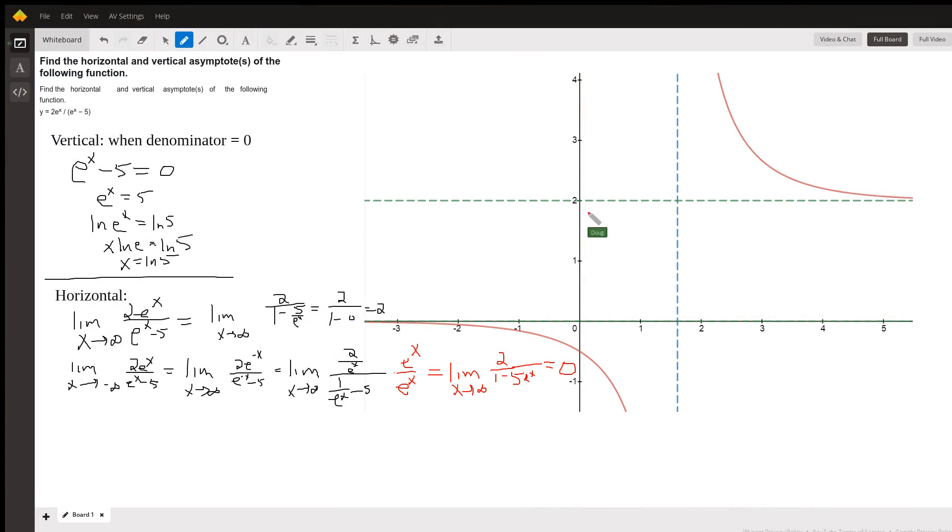Okay, over here to the right we have a graph of this function—that's the red curve—and we've sketched in the vertical asymptote. It looks like there's two horizontal asymptotes.